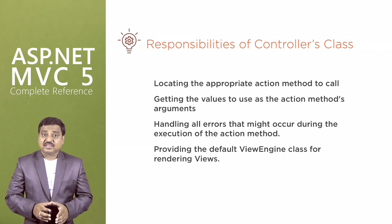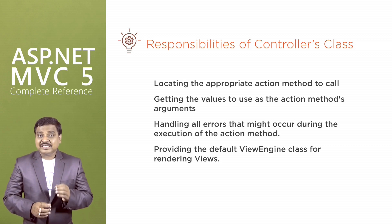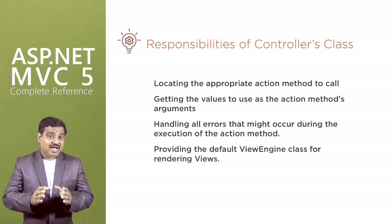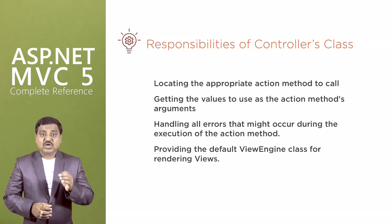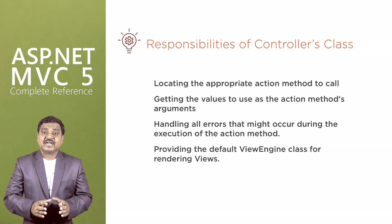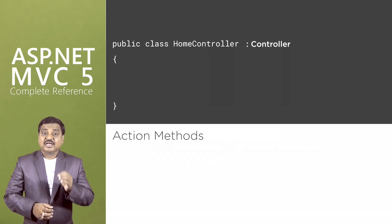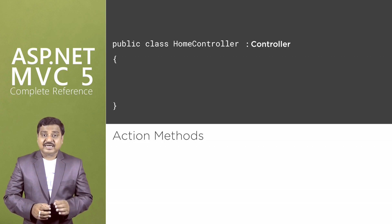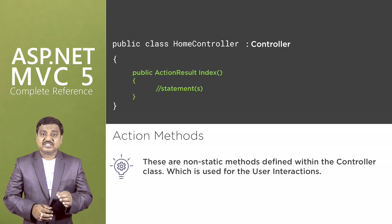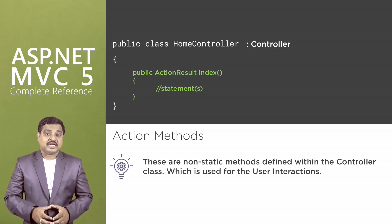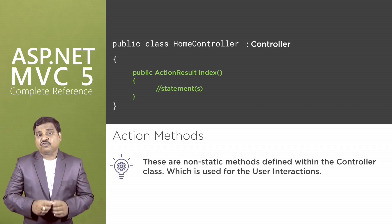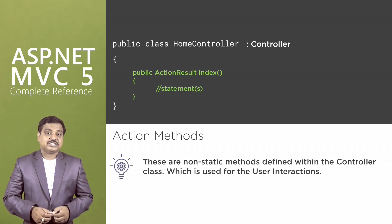I have been using the term action method quite a number of times till now. But what is an action method — we haven't discussed yet. So now let us try to understand what an action method is. In simple terms, an action method is a public non-static method defined within the controller class, which is used for user interactions.